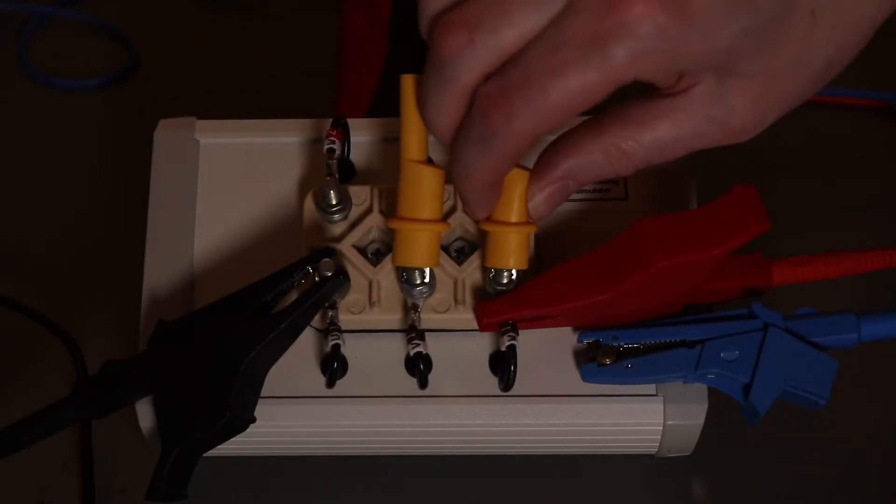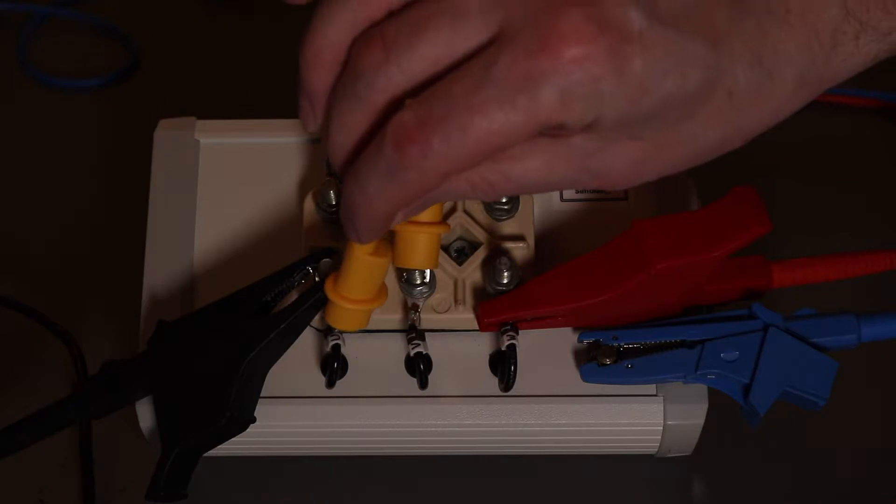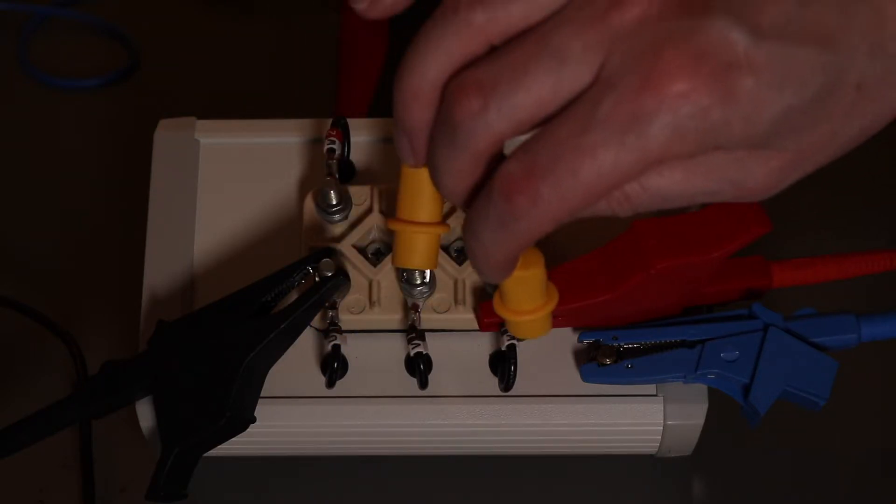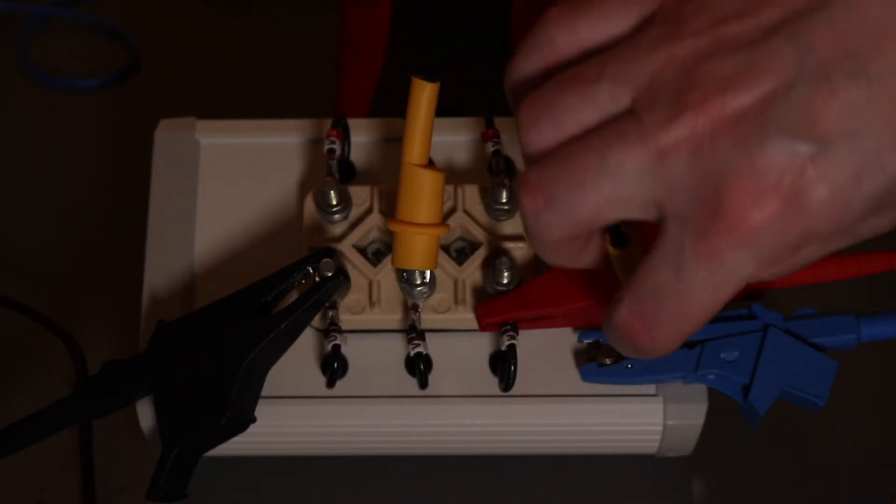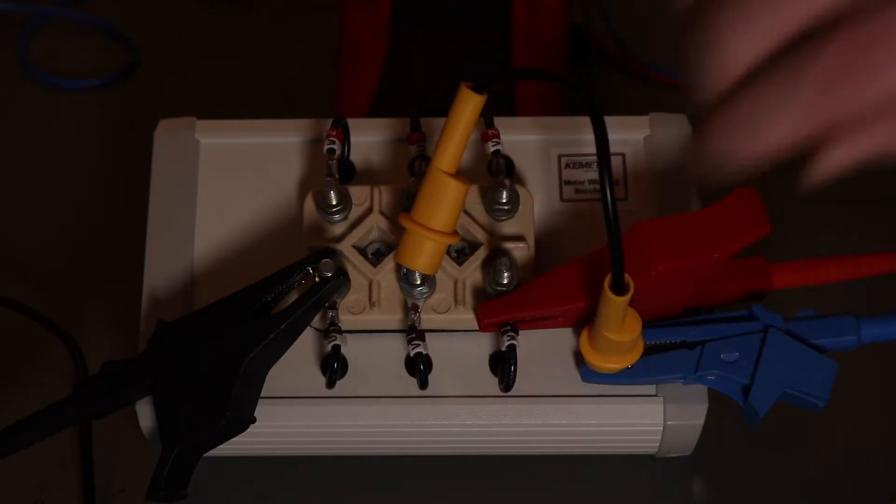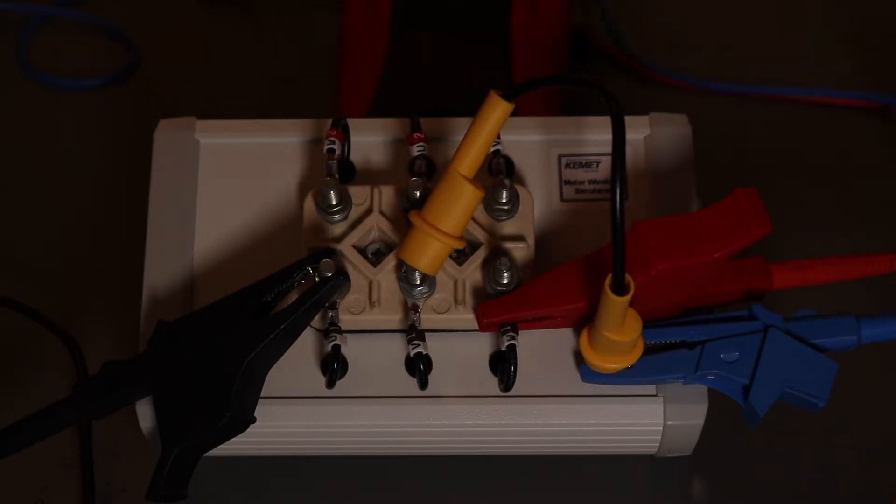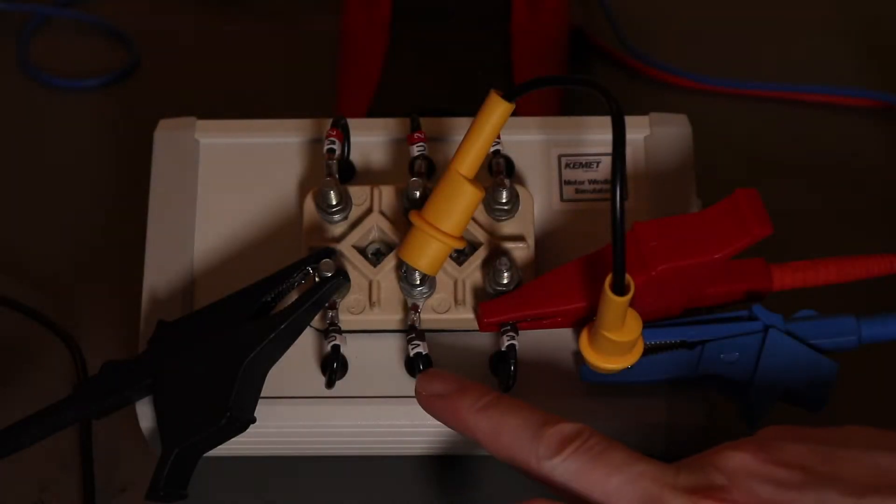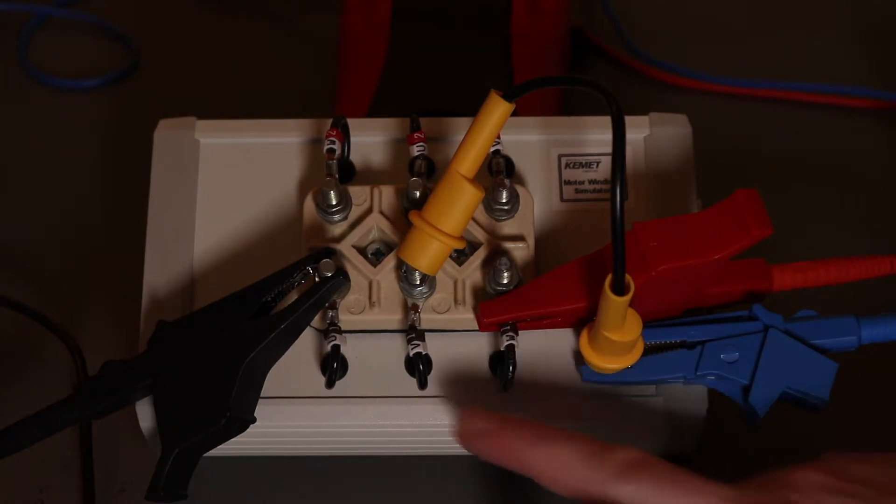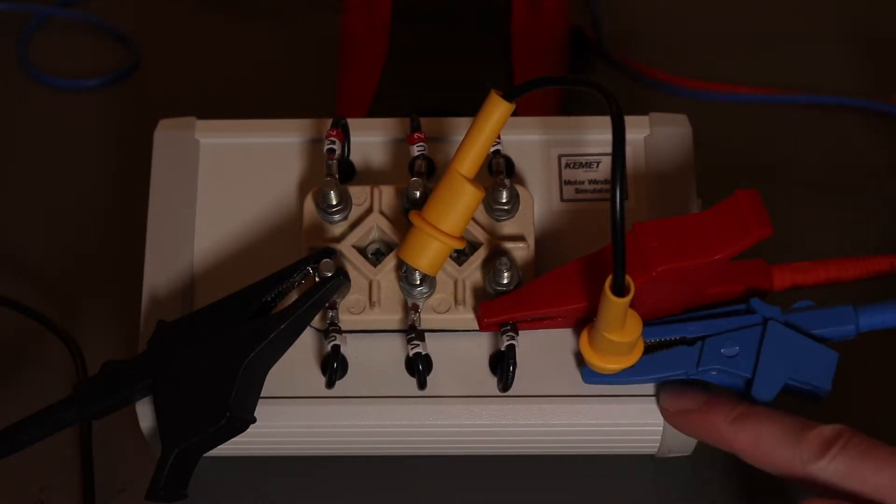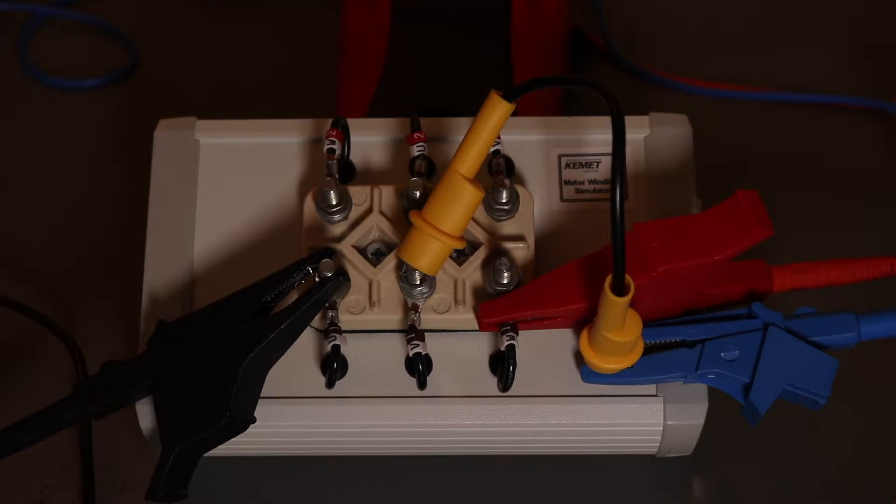I could have the option if I really wanted to test just the leakage from U into W. I could take the V winding and clip that onto earth. Then the leakage from here into here or here into here goes into the guard terminal and is subtracted from the result.